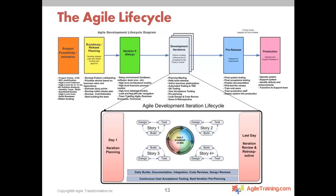The agile lifecycle I'll walk you through starts with feasibility and initiation — specifically for large or medium-sized initiatives going through an initial approval process, just as you would today. Lighter-weight techniques can speed that up. Once the project is approved and the team pulls it into their backlog, the lifecycle really begins with release planning. That's where the team meets with their sponsor and product owner to build the backlog — not at a detailed level, but at the story level.